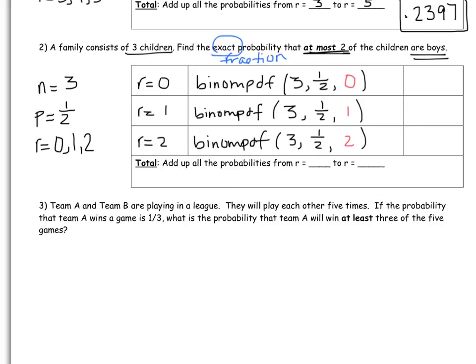So I got 1 over 8, 3 over 8, and 3 over 8. So now what we're going to do is we're going to total them all up. We're going to add up all the probabilities from r being 0 to r equals 2. So we're going to add all of those up, and you should get 7 out of 8. That's your probability.